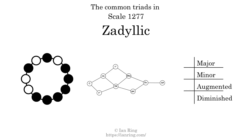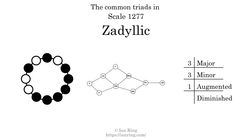Here are the common triads present in this scale. The diagram in the center is a graph of parsimonious voice leading between triads. There are three major triads, three minor triads, one augmented triad, and two diminished triads.